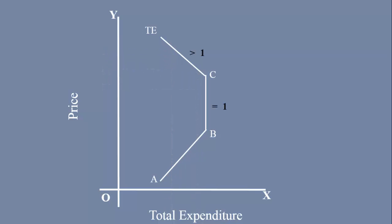Observe the segment AB. In this segment, there is positive relation between price and total expenditure. The price falls from P2 to P1. In this segment, the total expenditure also decreases from M2 to M1. Both are moving in the same direction.